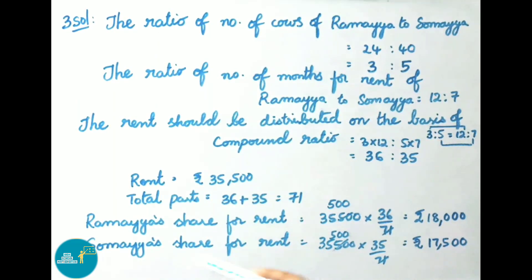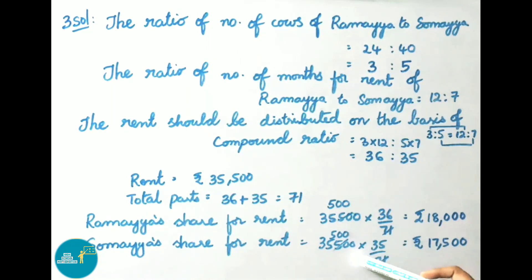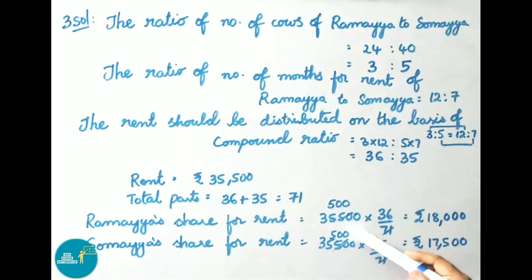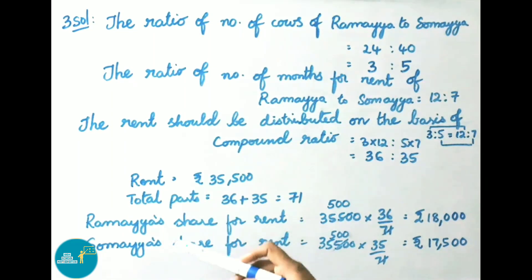Somaya's share for rent equals total rent 35,500 into 35 out of 71. Since 71 times 500 is 35,500, multiply 500 into 35, that equals 17,500 rupees. Therefore, Ramaya's share for rent is 18,000 rupees and Somaya's share for rent is 17,500 rupees.